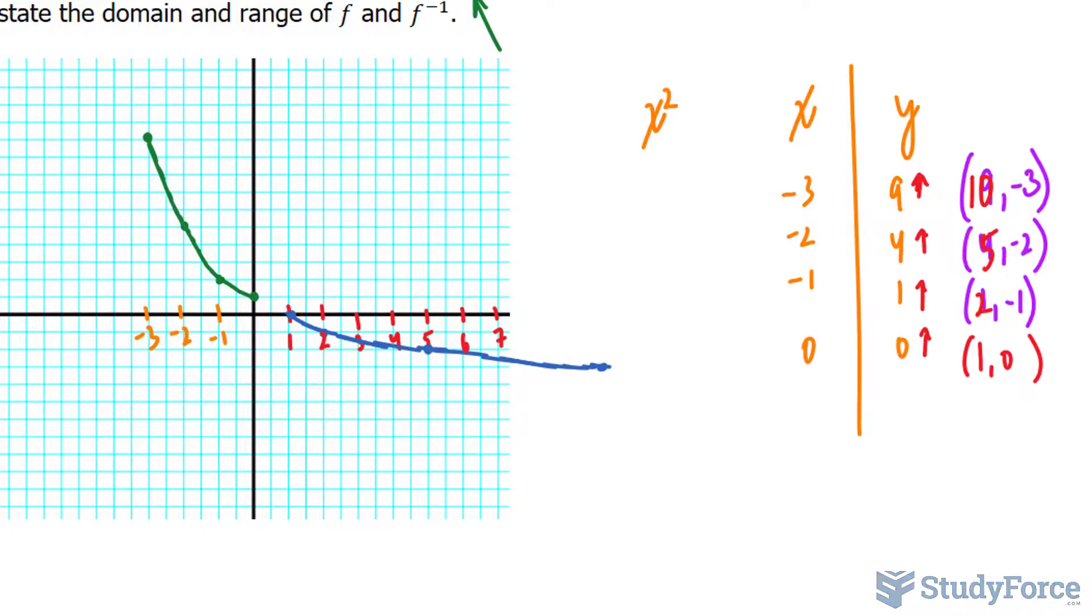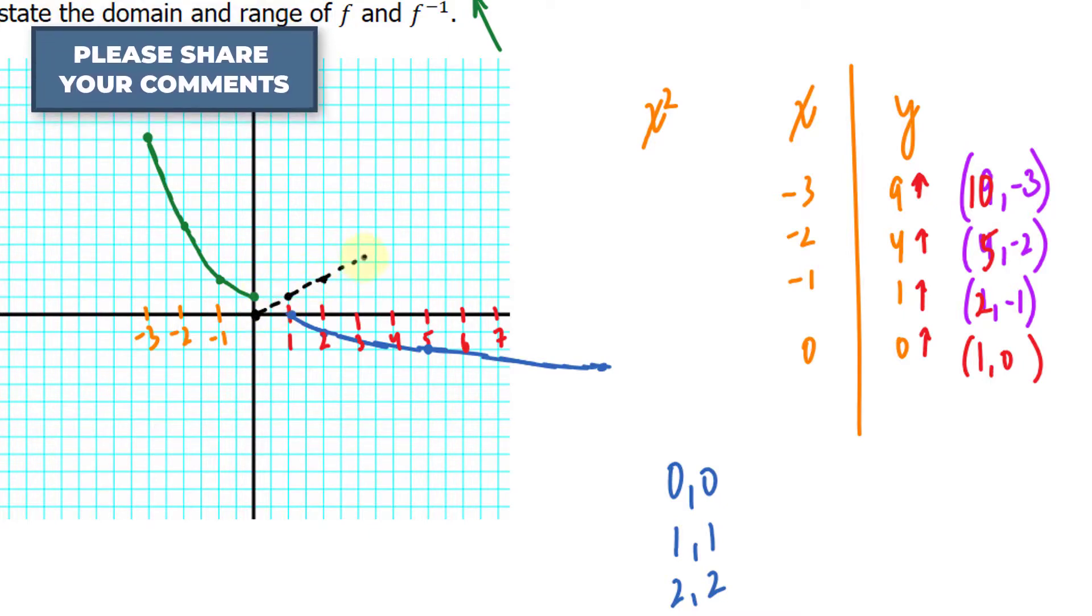y = x is a diagonal line that is passing through the origin, and it would have the points (0, 0), (1, 1), (2, 2), and so on. So let's say that at the origin, we have (0, 0), (1, 1) is over here, (2, 2) is over here, and it would look like this. So it's a reflection about this line.